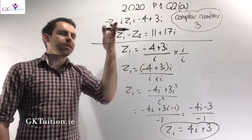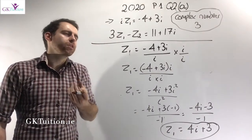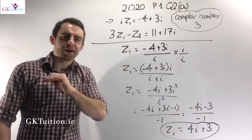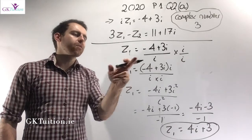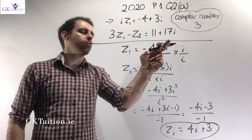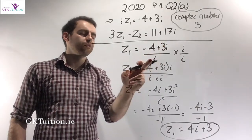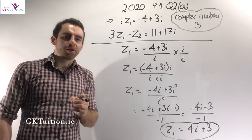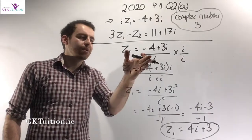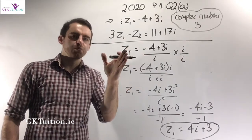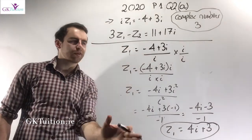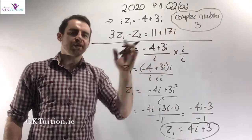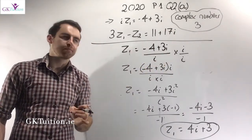I took the first equation and in order to get z1 on its own, I first divide everything by i. I get z1 equals minus 4 plus 3i over i. To explore how to eliminate this — if you're not 100% on the theory, you can find it in complex numbers 3 on the website.